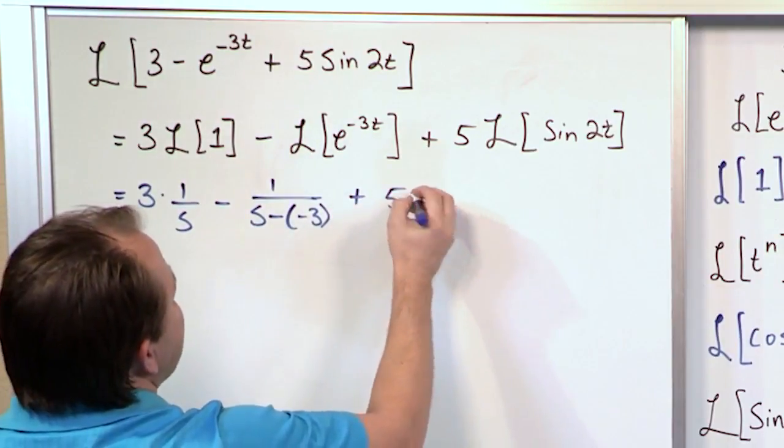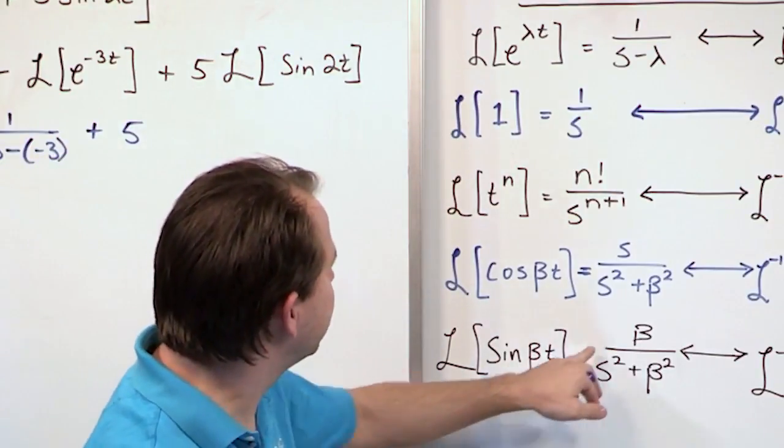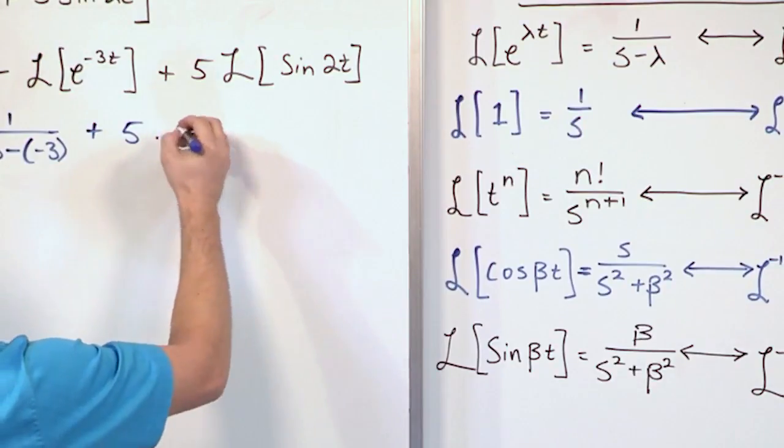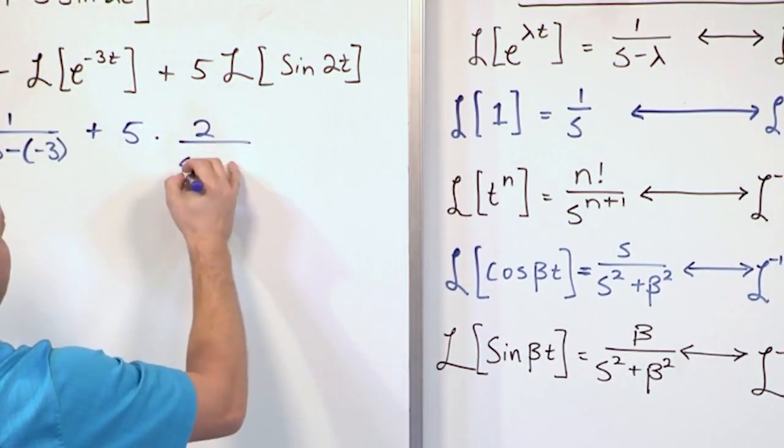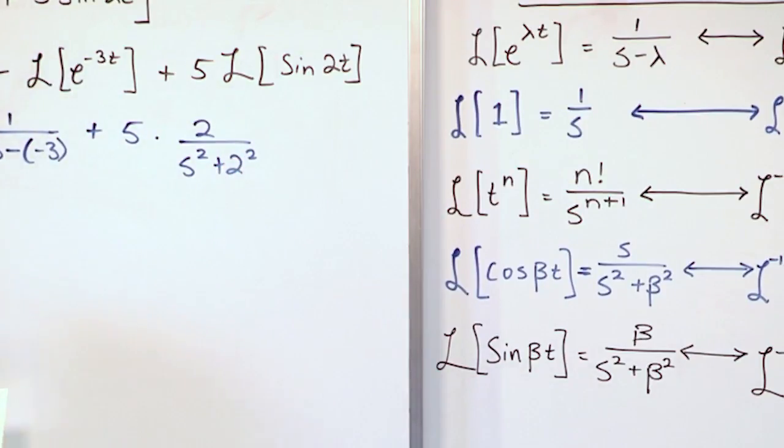Then we have 5 times Laplace of sine of 2t which is this. So it's 2 over s squared plus 2 squared. So what we're going to have is 2 over s squared plus 2 squared. Again I know that you know that 2 squared is 4, but you don't want to do too many things at one time.